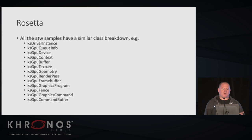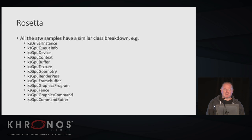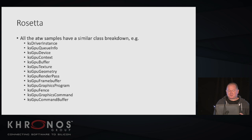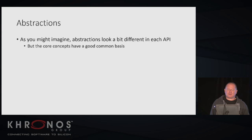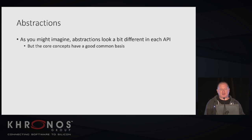I encourage you to take a look at this example. It's not complicated, but it's worth looking at for the notion of having a 'Rosetta Stone' application that illustrates how to do relatively straightforward rendering in multiple APIs. All the ATW samples have breakdowns including driver instance, GPU queue info, GPU device, context, buffer, texture, geometry, and more. The source code illustrates what they all are.